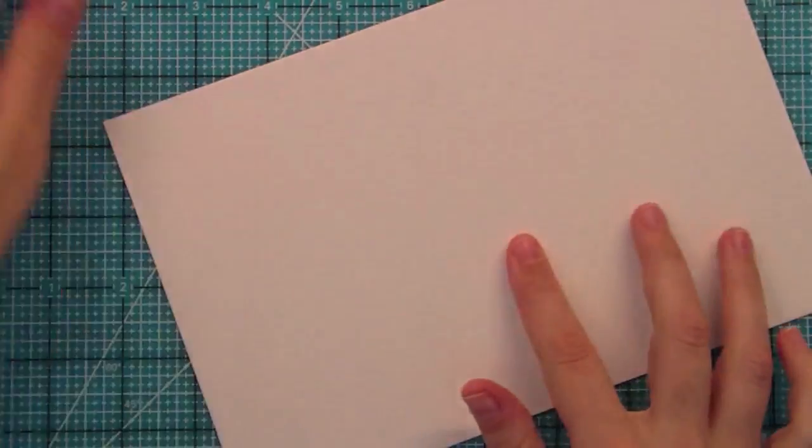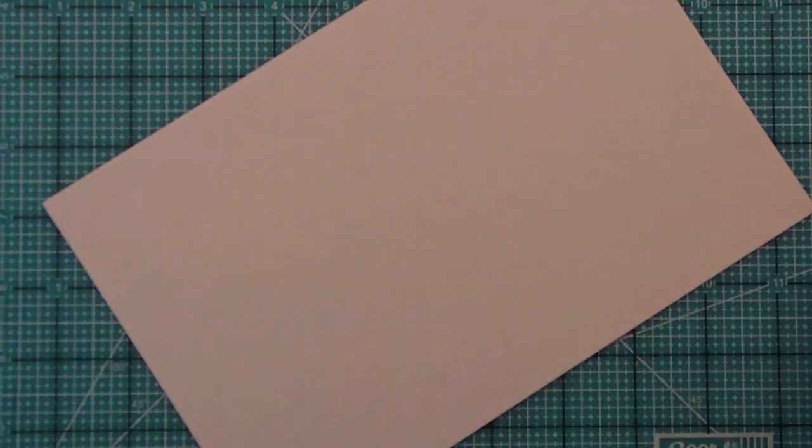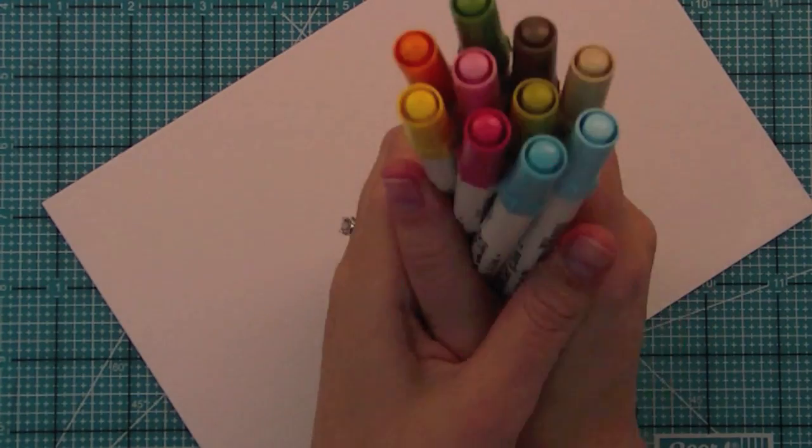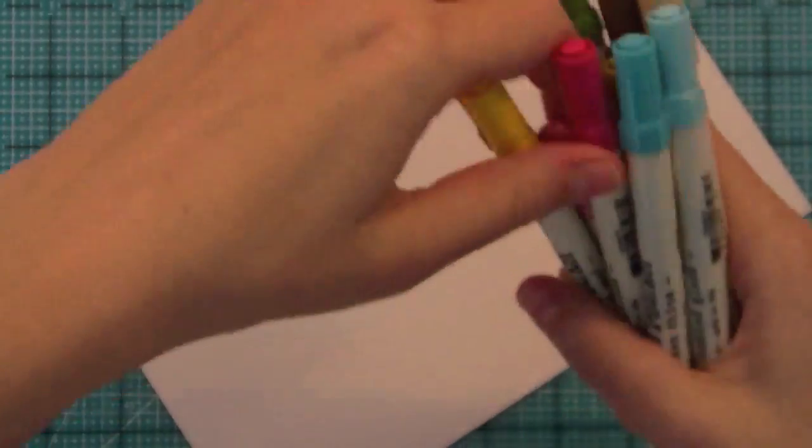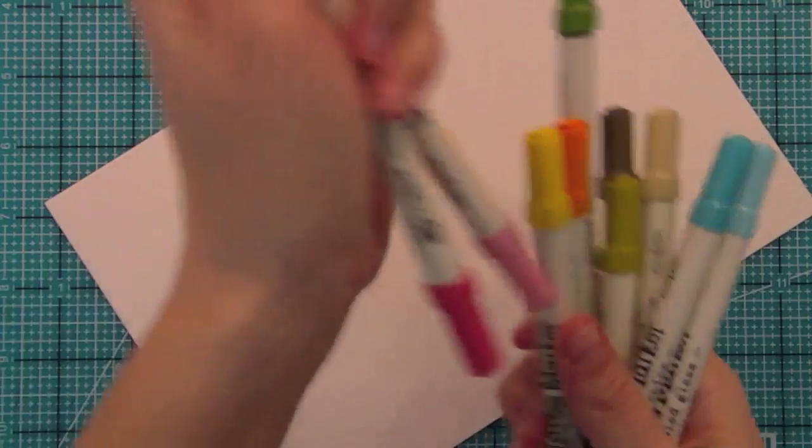So right there is our Flutterby set and this is some watercolor paper and we're going to be using some Distress Markers to watercolor. We're also going to use a Crayola marker later which you can totally do so I'll show you that in a little bit.